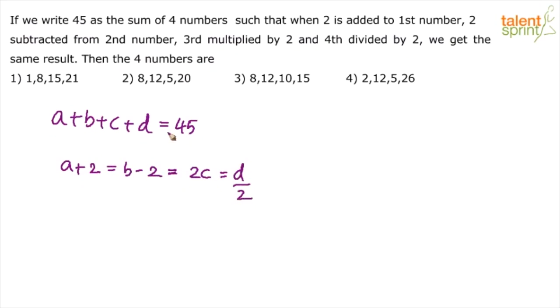Find out which options satisfy all these conditions. Do not try to solve it on paper. Just go by options and you will get the answers. I mean verify from the options. 45 should be the sum of all the numbers. First number when you add 2, from second number when you subtract 2, from third number when you multiply by 2 and fourth number when divided by 2 should give you the same result.